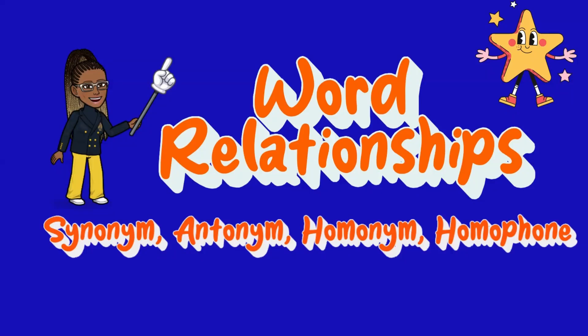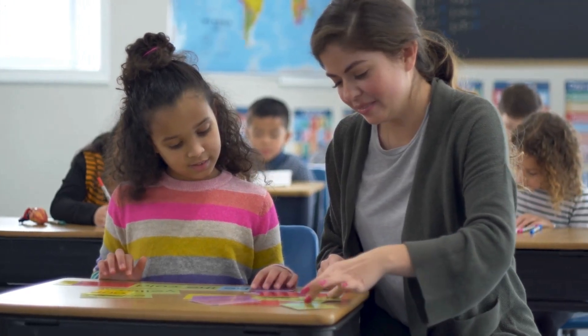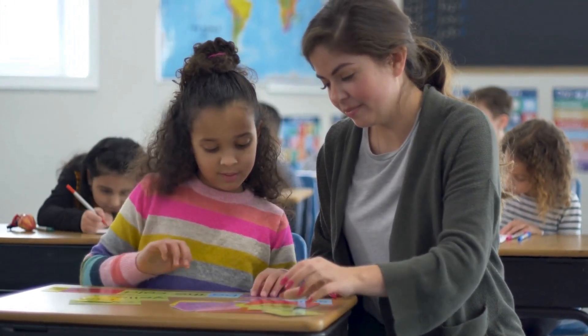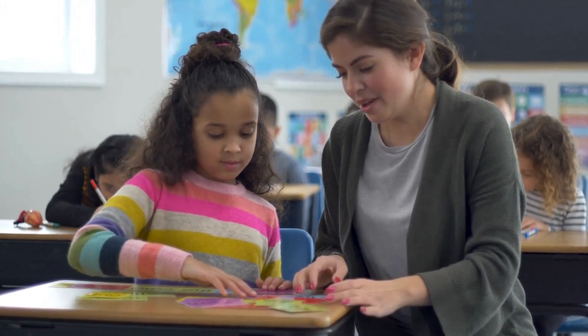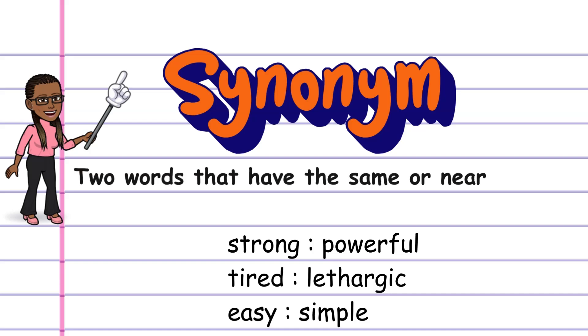In today's lesson, we'll be taking a look at word relationships. There are four main word relationships: synonym, antonym, homonym, and homophone.